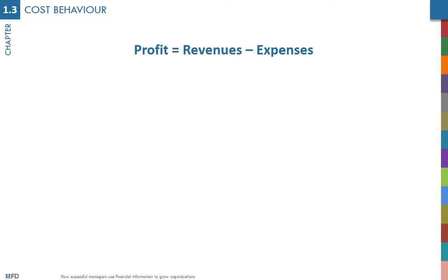The profit equation is the difference between revenues and expenses. Expenses are made of costs. Costs are the value of resources. They are often the main element under management's control. Revenues depend to a larger extent on market conditions.